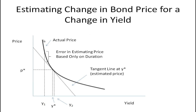This dark curve I've drawn here is the bond price-yield relationship, and you can see it's downward sloping because as yield goes up the price of the bond goes down. You also notice that it's not a straight line — it's a curve, it's convex.